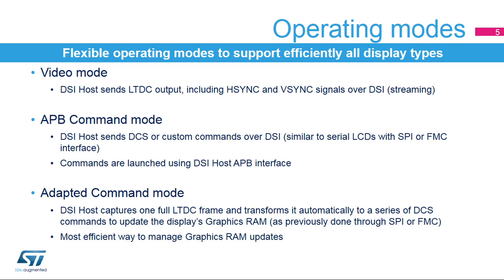APB command mode sends commands over the high-speed link for configuration, as is done using a legacy serial interface such as SPI or FMC. The commands are launched using the DSI host APB interface. Adapted command mode is the best way to interface with a display having its own internal graphics RAM. The DSI host captures only one full frame coming from the LTDC and transforms it into a series of write commands to update the display graphics RAM.